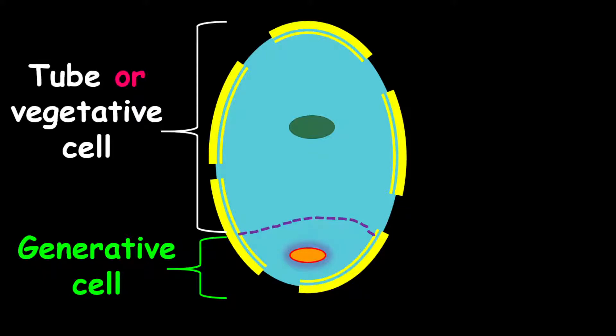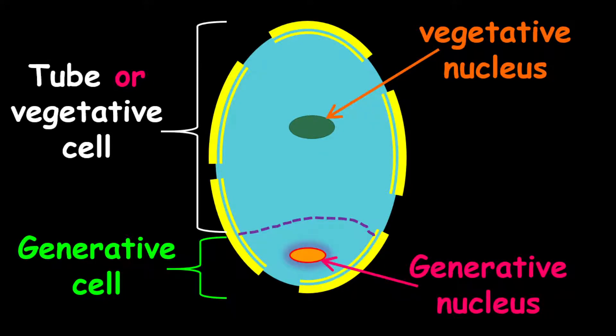Now in both cells, we have nuclei. The tube or vegetative cell is composed of the vegetative nucleus, while the generative cell also has a nucleus, which is called the generative nucleus. We're going to see the importance of these nuclei in a short while.